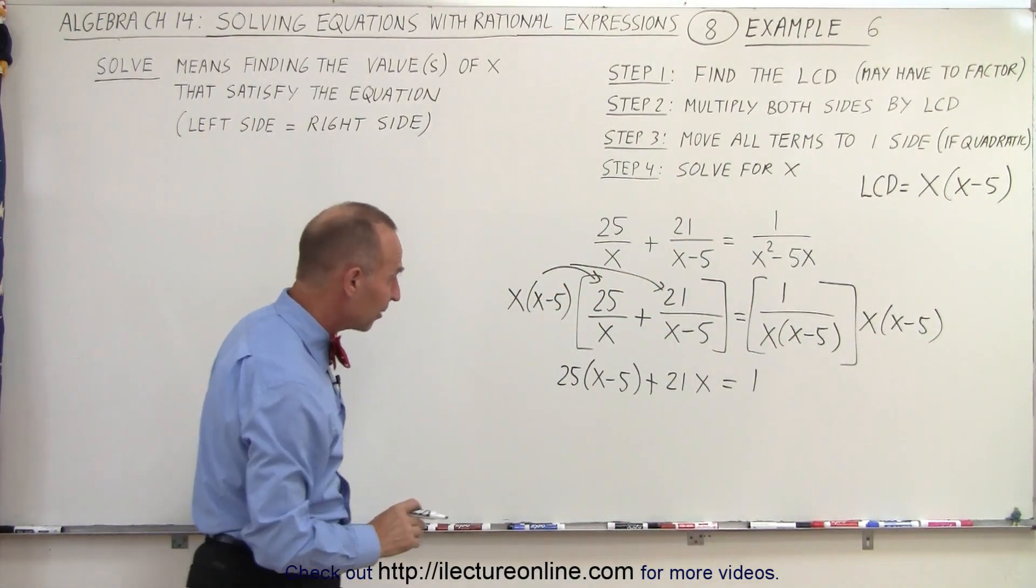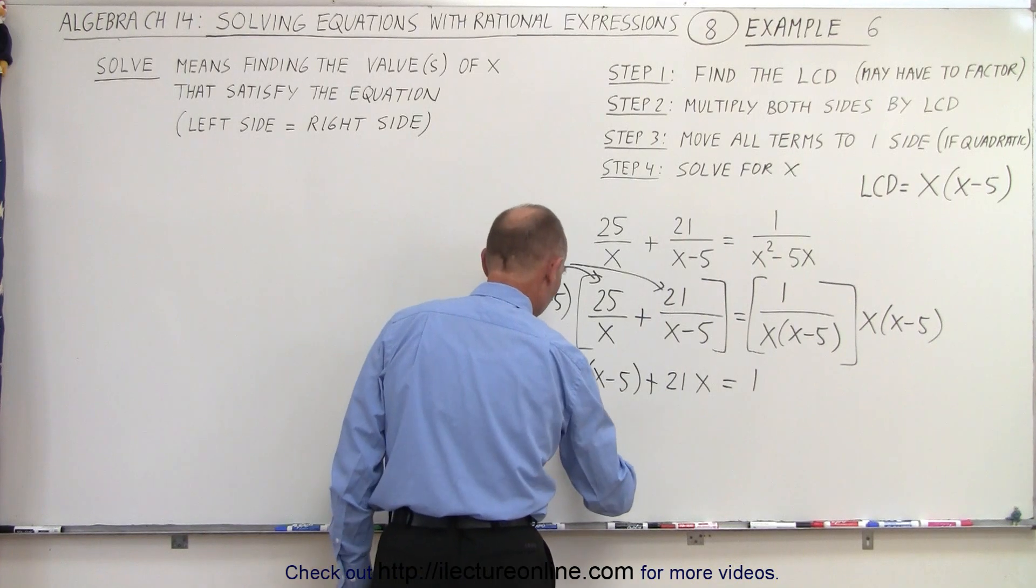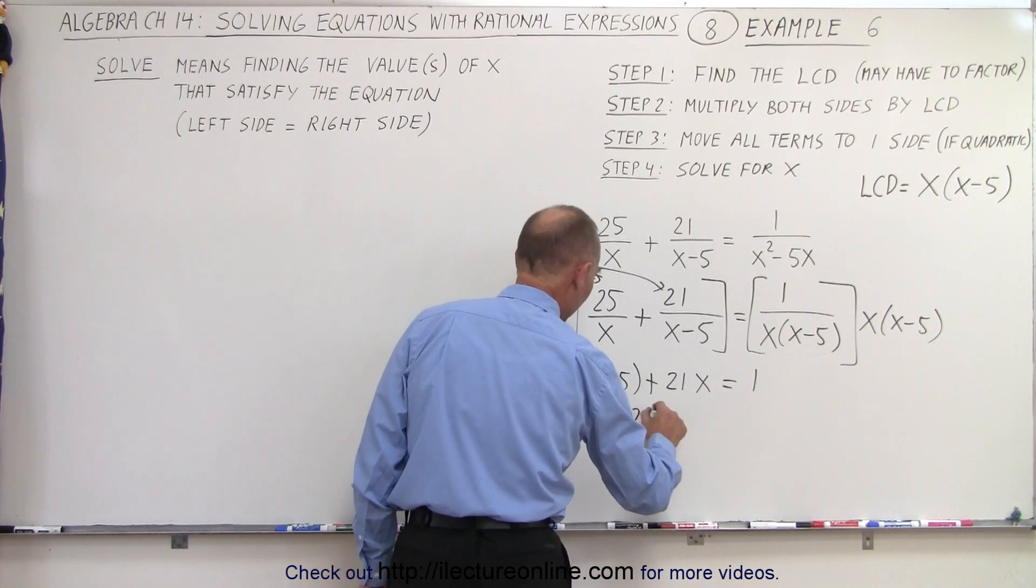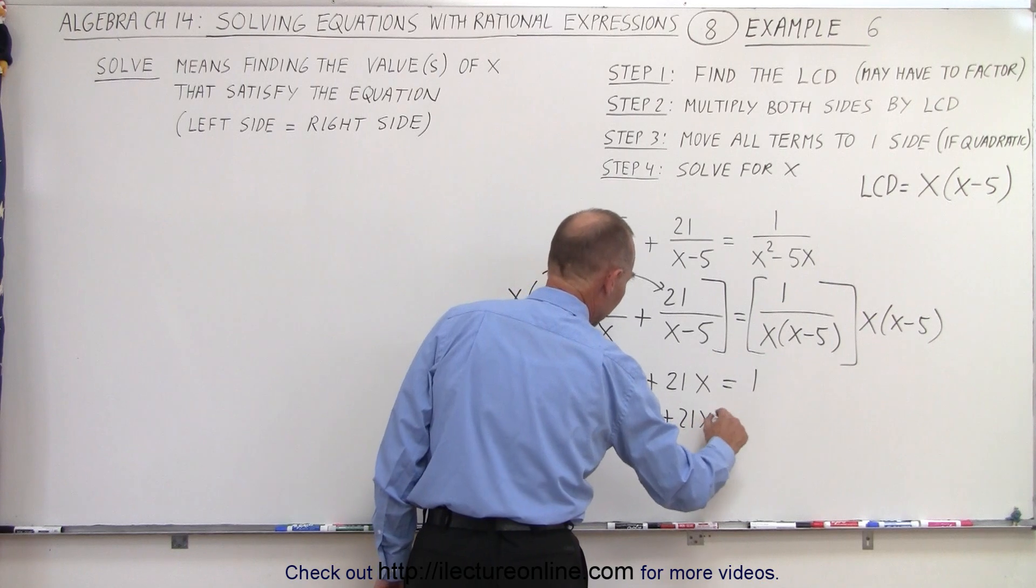Now let's multiply on the left side so we get rid of the parentheses. 25x minus 125 plus 21x equals 1.